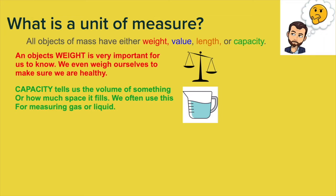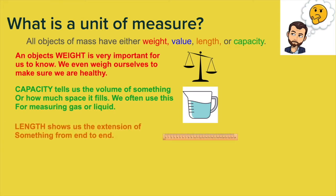Capacity tells us the volume of something or basically how much space that object fills. We often use this for measuring gas or liquid because we know that gas or liquid we can't hold steadily in our hands. So we have to put it into a container. Depending on the size of that container, we call that capacity. And length shows us the extension of something from end to end. This is very important if we need to fit something into something else. So if we need to put a sofa into our new living room, we need to know how long that sofa is so that it fits.